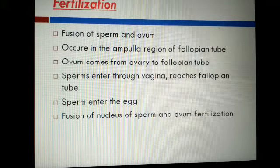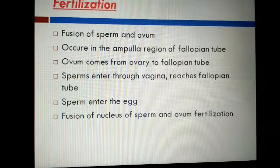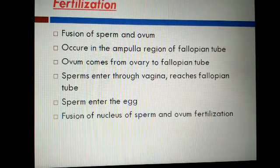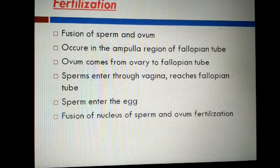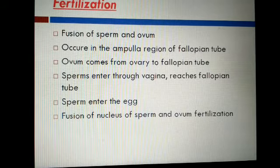Fertilization is the fusion of male and female gametes. In humans, the male gamete is sperm and the female gamete is ovum. So fertilization is the fusion of sperm and ovum. Now the question is: where does fertilization occur? You all know that fertilization occurs in the fallopian tube — but in which region of the fallopian tube?